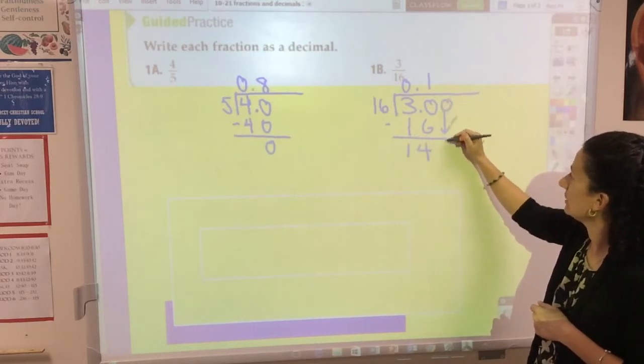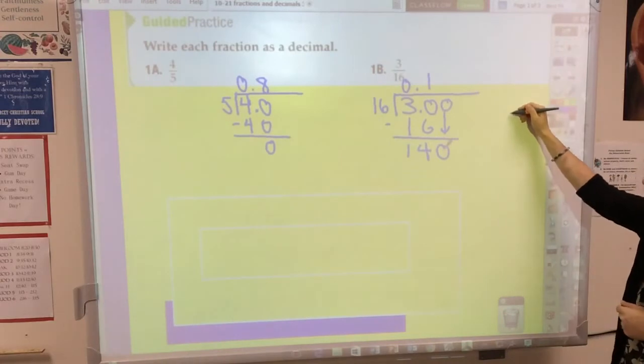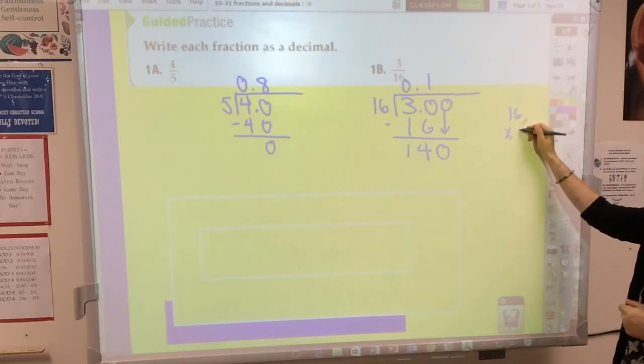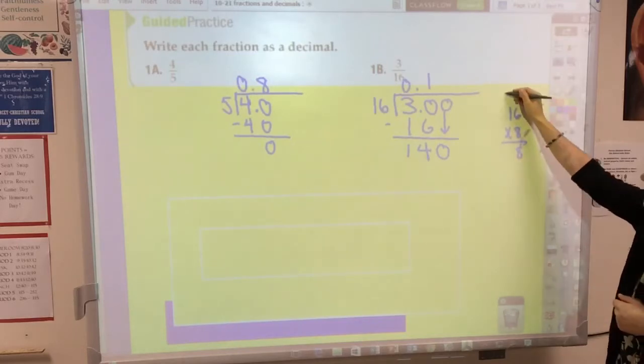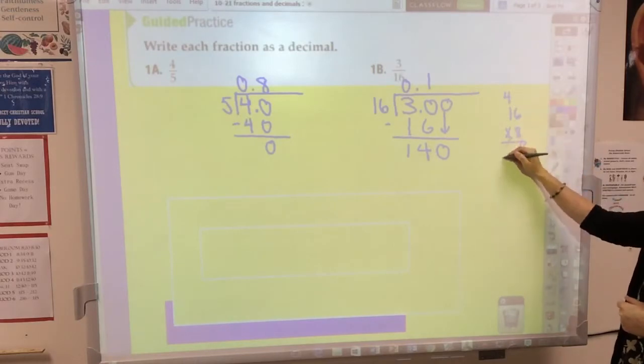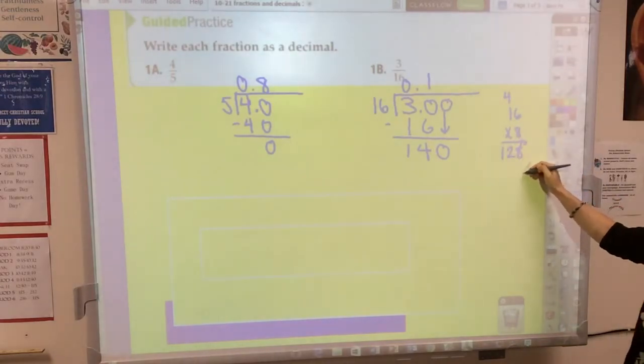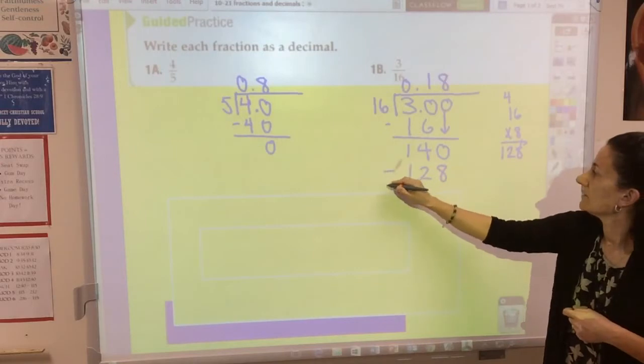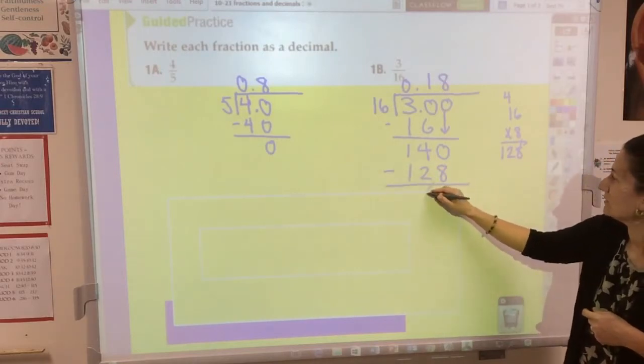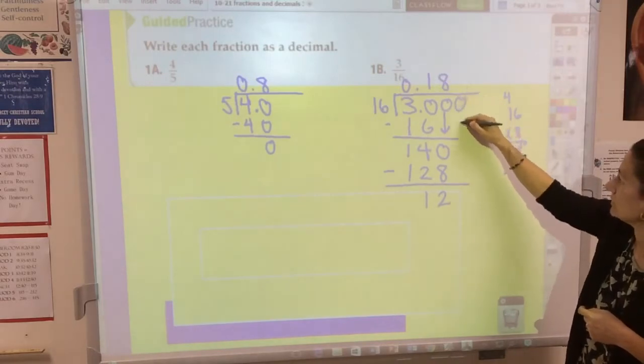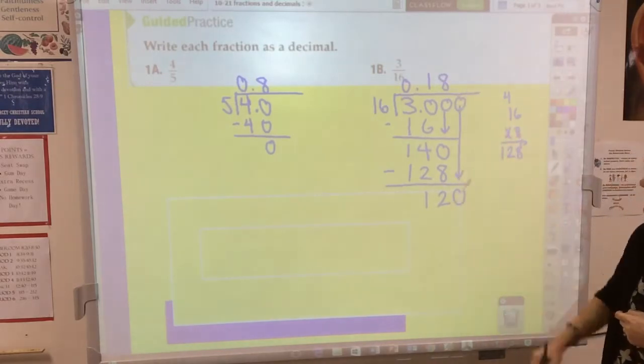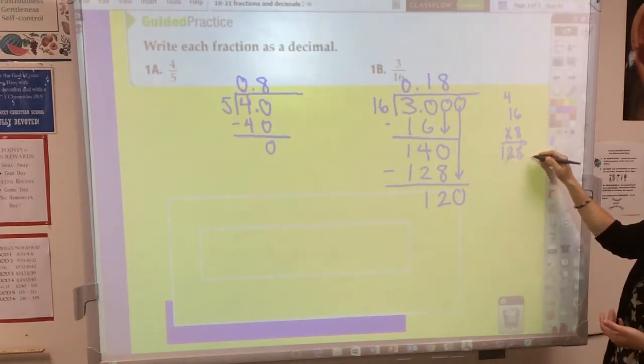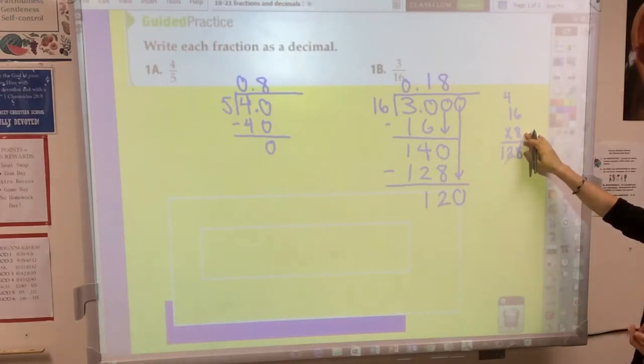Let's see, 16 into 140. Let's try 8 times. 6 times 8 is 48, 1 times 8 is 8 and 4 is 12. And it looks like that was close enough. 8 times 16 is 128, and my remainder is going to be 12. Now I'm going to divide 16 into 120. I know it goes into 128 times, that must be 7.